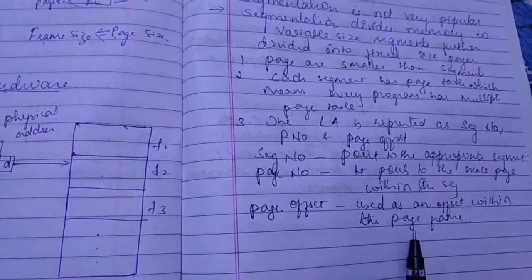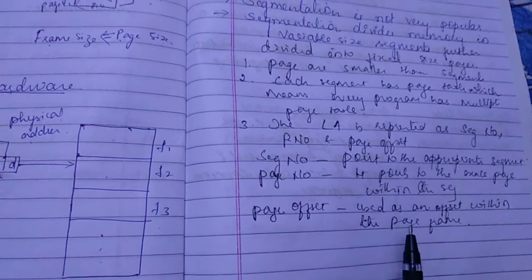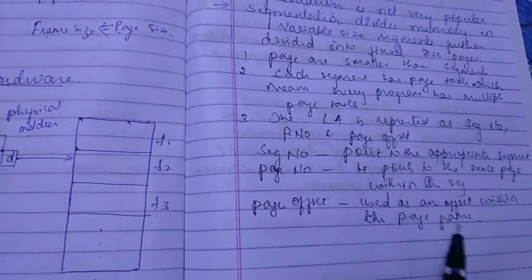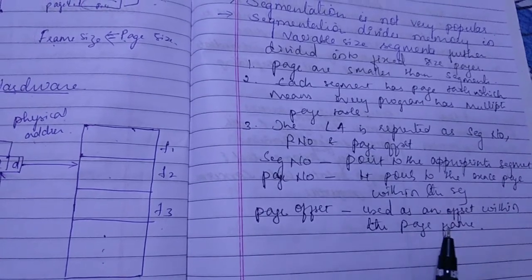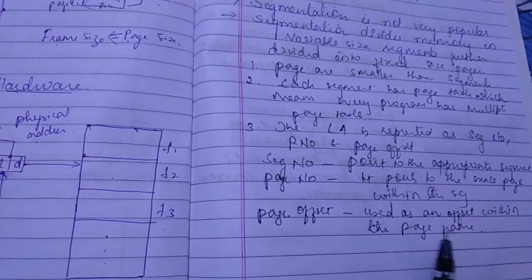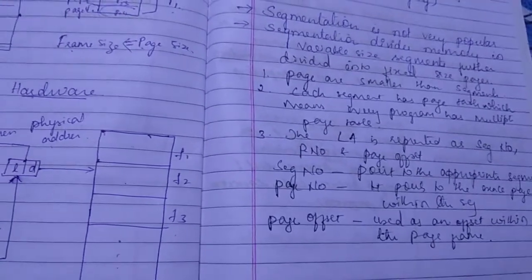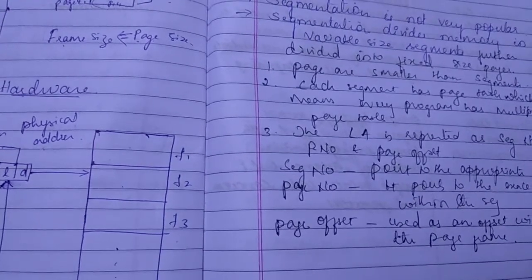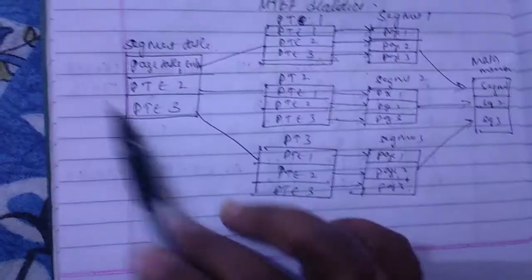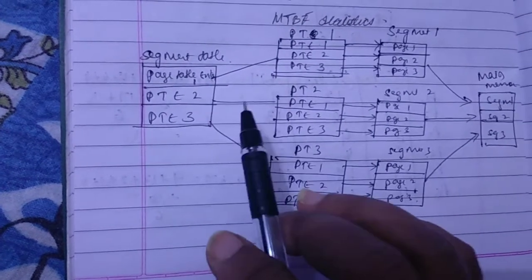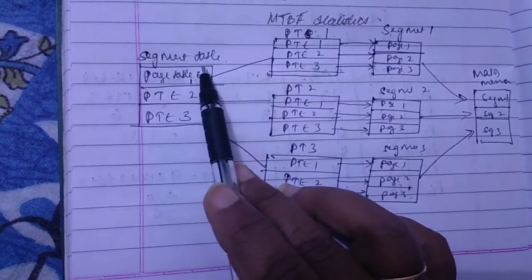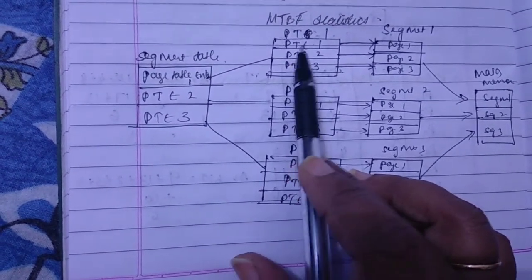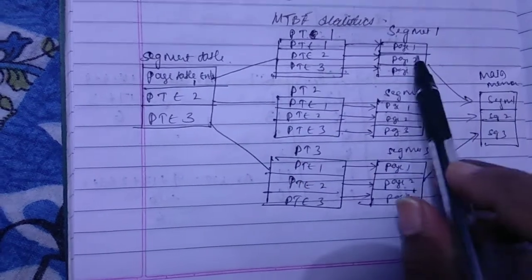And the segment table contains the information about every segment. Each segment table entry points to a page table entry. And every page table entry is mapped to one of the pages within the segment.